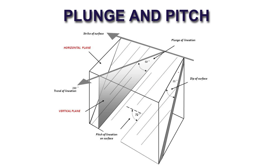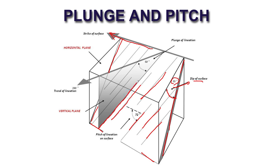Here is a plane you can see — it is dipping, and there is the strike of this plane. The dip amount of this surface is 55 degrees. Now there are some lineations on the surface of this bed. It looks like there is a fault plane with slickensides, suggesting an oblique fault. We measure the pitch and plunge of this lineation from top to bottom.